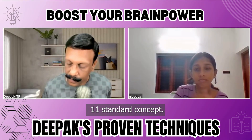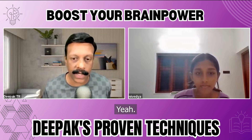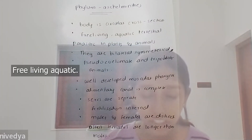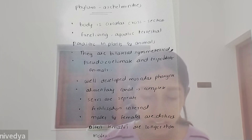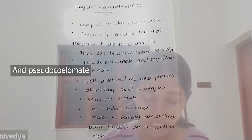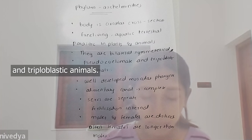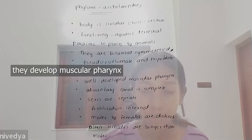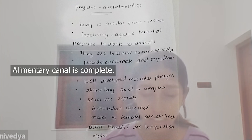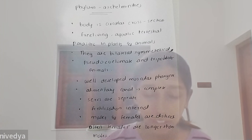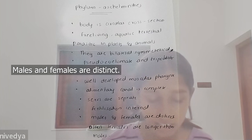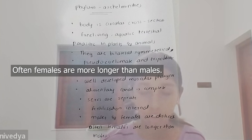You have picked up the Phylum Aschelminthes. Phylum Aschelminthes: bodies circular in cross section, free-living, aquatic, terrestrial, parasitic in plants and animals. They are bilaterally symmetric, pseudocoelomate and triploblastic animals. Well-developed muscular pharynx, alimentary canal is complete, sexes are separate, fertilization is internal, males and females are distinct — often females are longer than males.